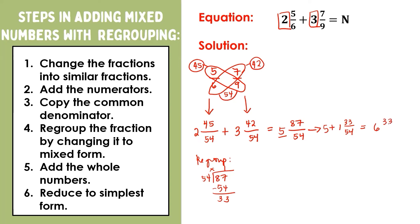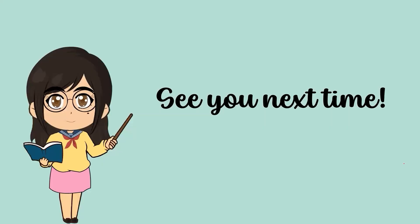So we'll have six and thirty-three over fifty-four. Finally, let us simplify our answer. Thirty-three and fifty-four are both divisible by three. Thirty-three divided by three is eleven, and fifty-four divided by three is eighteen. And since the only common factor of eleven and eighteen is one, then thirty-three over fifty-four is simplified as eleven-eighteenths. Thus, the final answer is six and eleven-eighteenths. See you again next time.